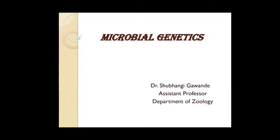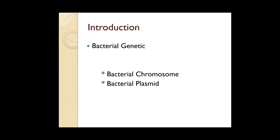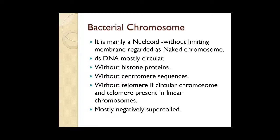Good morning. Today's topic is microbial genetics. Introduction to bacterial genetics: it is of two types — bacterial chromosome and bacterial plasmid. The bacterial chromosome is mainly a nucleoid without a limiting membrane, regarded as a naked chromosome, also called prokaryotic genetic material. It is also called nucleoid, meaning 'nucleus-like.'